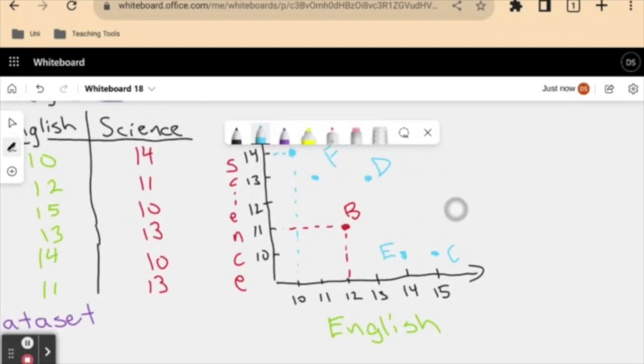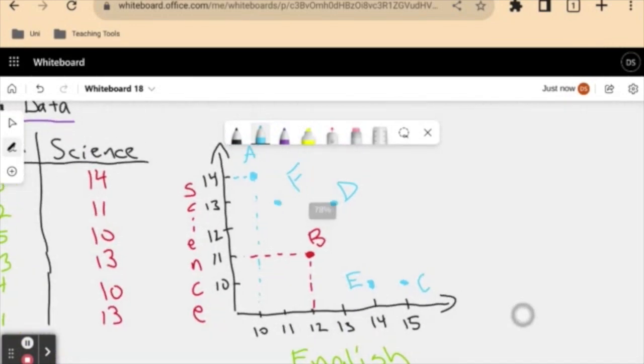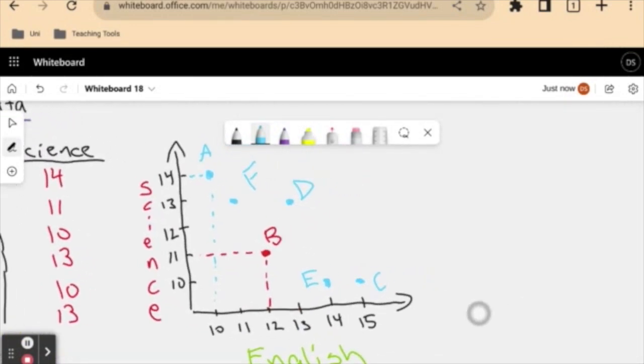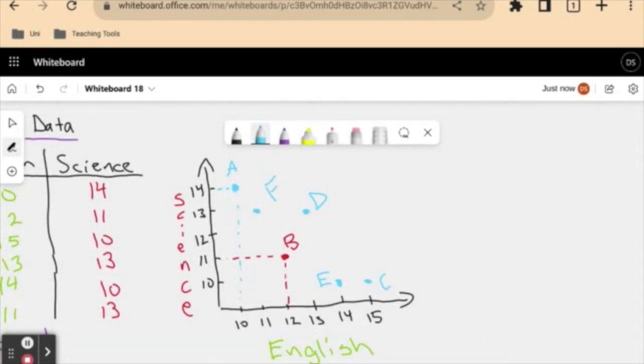Now, this that we've drawn here is essentially our scatter plot. It shows all of the information on my table, but just graphically. Now, what benefit does this give us to show this graphically? Well, one thing is that I think data is a lot easier to look at visually. For one, I think it makes it a lot prettier.